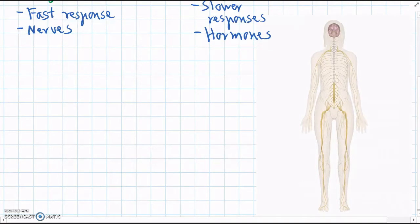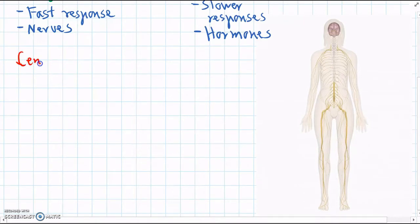The structure of the nervous system can be divided into two main parts. The first part is the central nervous system, which we can just call the CNS.